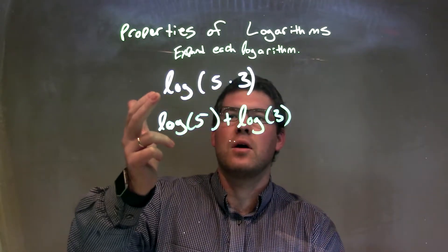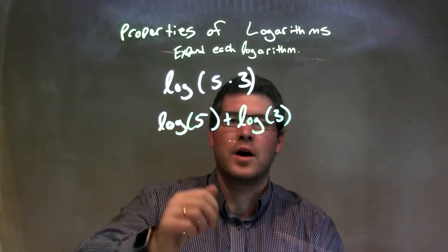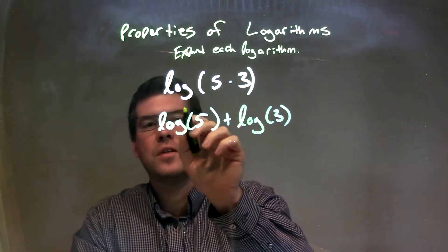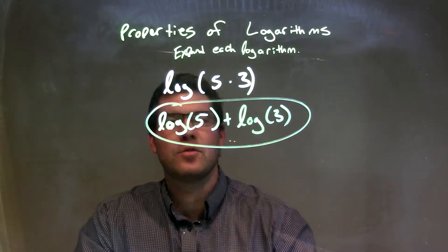And so now we've expanded log of 5 times 3 to be log of 5 plus log of 3, and that's it, that's all we can expand it, and that is our final answer.